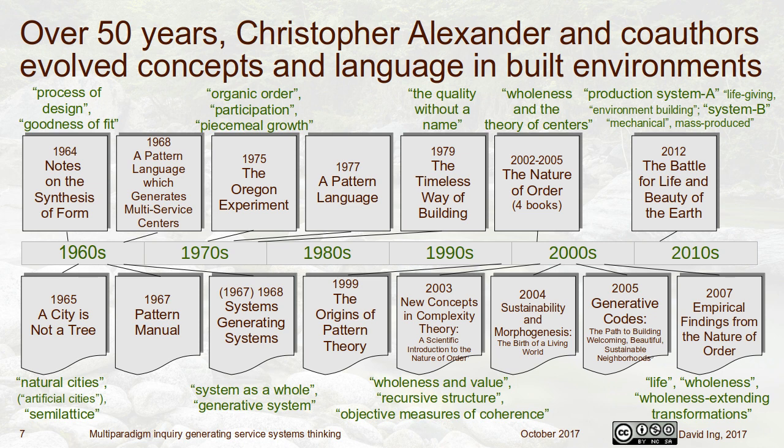In 1967-68, A Pattern Language Which Generates Multi-Service Centers describes the design of multi-service centers for poor people who need housing, physical checkups, mental health, child care — services previously spread across departments. Notably, Alexander explicitly writes in that book: 'we are only focused on the building, we are not focused on the services.' In 1967, 'Systems Generating Systems' introduces the idea of a system as a whole and a generative system.